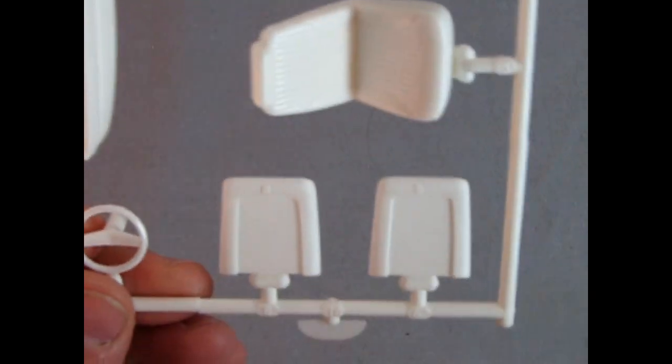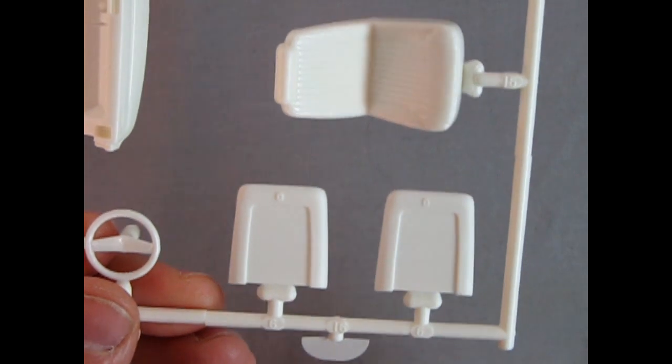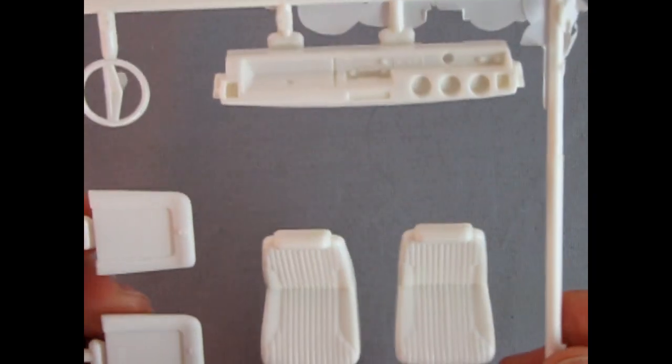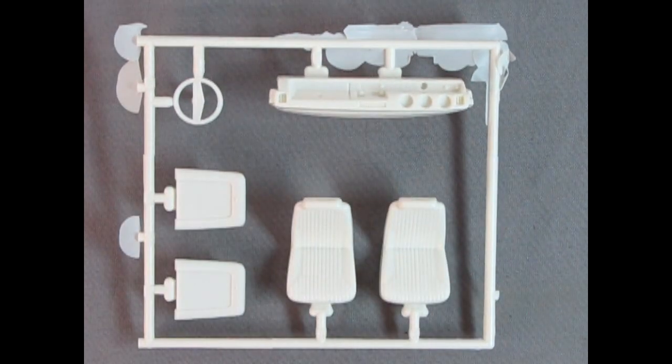Look at the nice detail on the bucket seats. And it even includes the button you push to tilt this forward, so that people can get in the back seats there. Again, another nice example of excellent molding from the golden age.